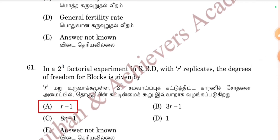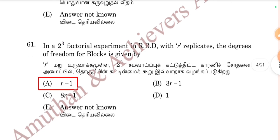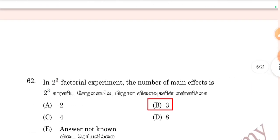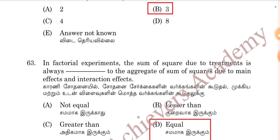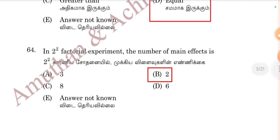In a 2-cubed factorial experiment in a randomized block design with r replicates, the degrees of freedom for blocks is given by r-minus-1. Option E, question 61. In a 2-cubed factorial experiment, the number of main effects: options are 2, 3, 4, or 8. The sum of squares due to treatment is always equal to the aggregate of sum of squares due to main effects and interaction effects — Option D, equal, is correct.